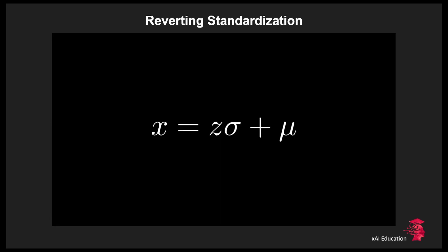Reverting this transformation is as simple as applying this formula. You just have to solve the z score equation for x and that's it.